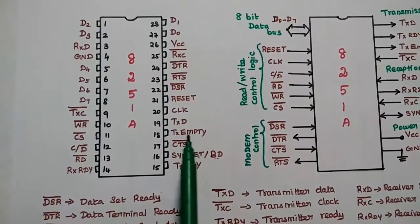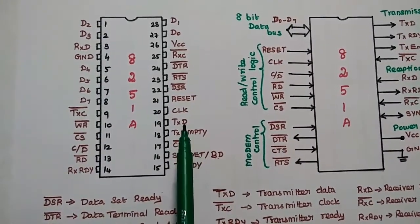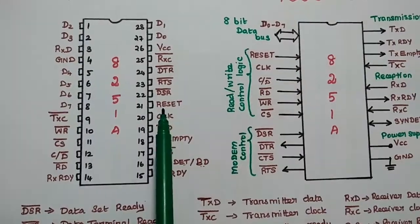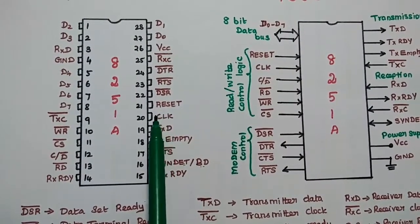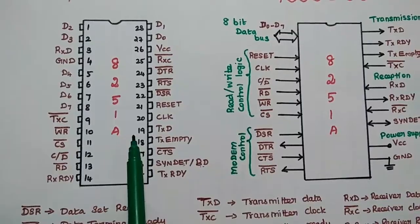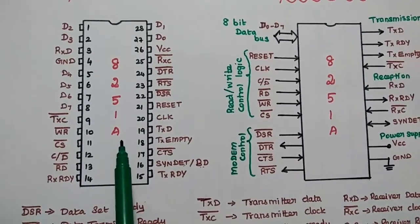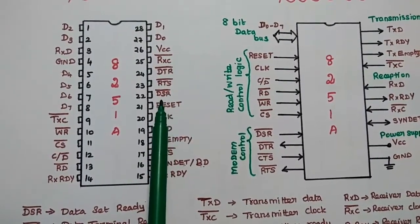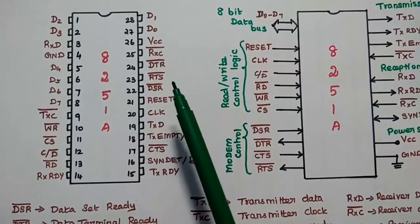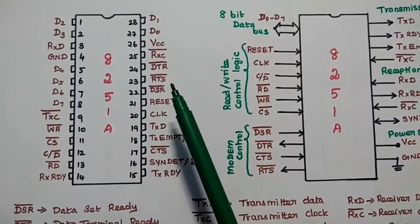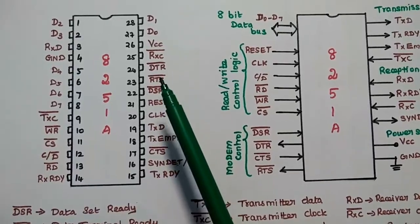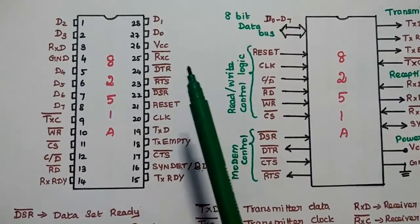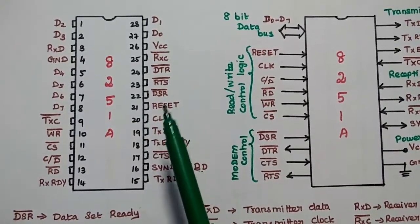The transmit empty signal indicates that the transmitter is empty. There is also a common clock for the device and a reset pin, which is used to reset the 8251A and make it return to the idle state. DSR means data set ready for modem. RTS means request to send. DTR means data terminal is ready. These four — CTS, DSR, RTS, DTR — are modem-related signals.